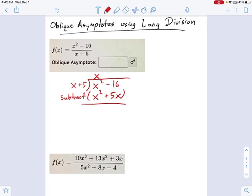So I'm going to subtract this x squared plus 5x from x squared minus 16. So we're subtracting this x squared minus x squared, which is 0. Negative 16 minus 5x is going to be negative 5x minus 16.